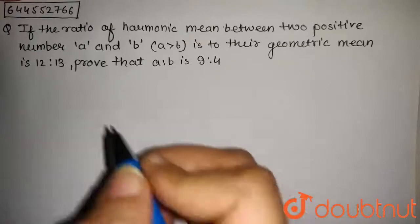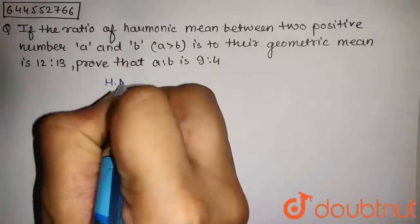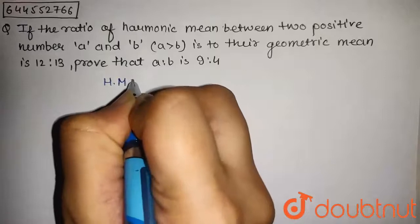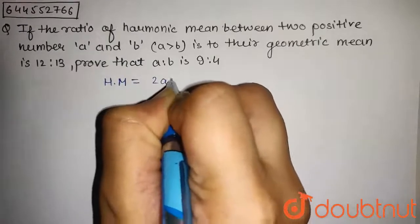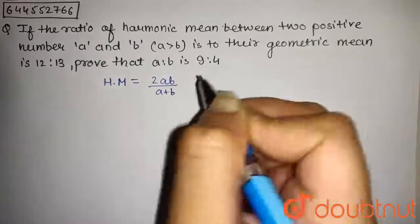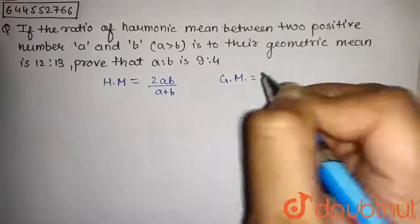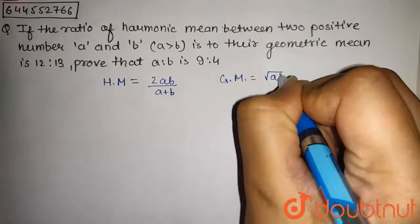We know that the harmonic mean of two numbers A and B is given by 2AB upon A plus B and geometric mean of A and B is given by under root AB.